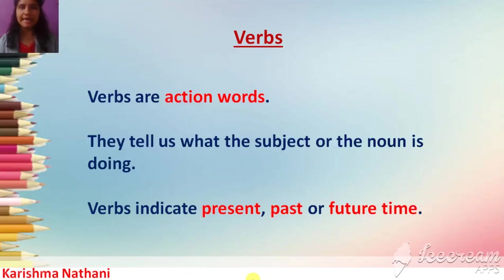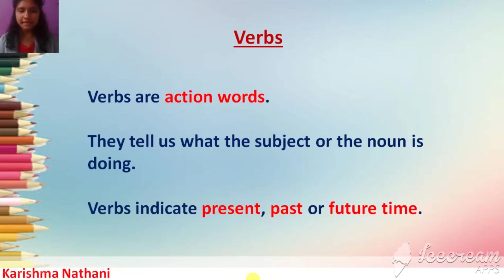Verbs are action words. They tell us what the subject or the noun is doing. The verbs in a sentence also tell us about when the action happens. In other words, they indicate present, past, or future time.